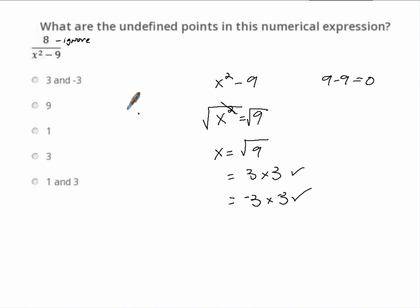So there's actually two answers here that would work. We could use 3 or negative 3 to make this equal to 9 and we get 9 minus 9 and that makes it equal to 0. And we end up with 8 over 0 when x equals 3 or negative 3.